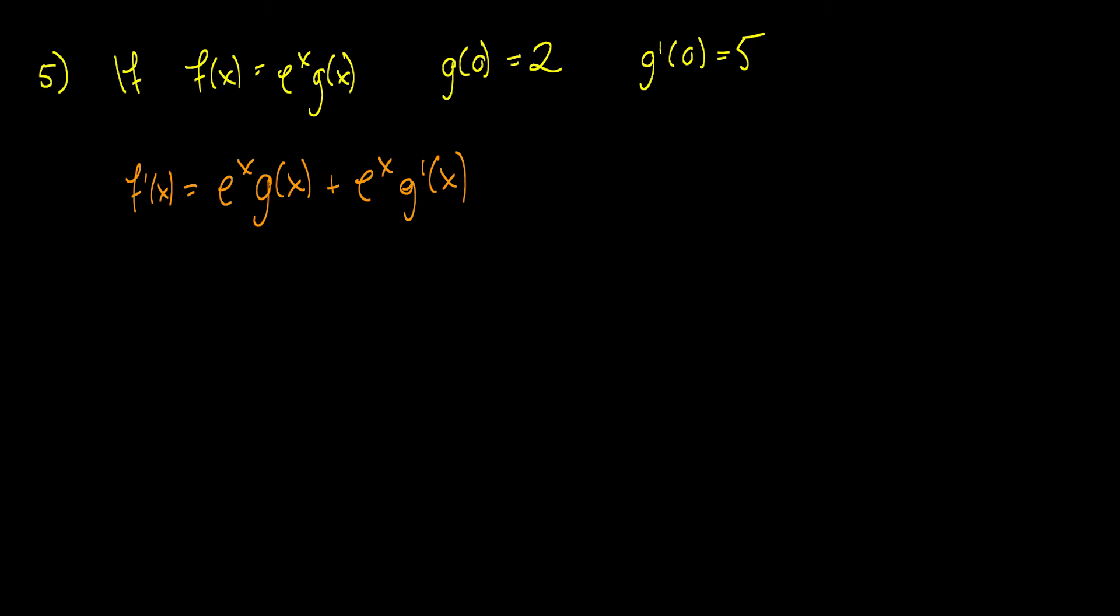And now we're going to substitute in 0 for x. So we have e to the 0 times g of 0 plus e to the 0 times g prime of 0, which is equal to, well, e to the 0 is 1, so g of 0 is 2, and g prime of 0 is 5, so this is equal to 7.